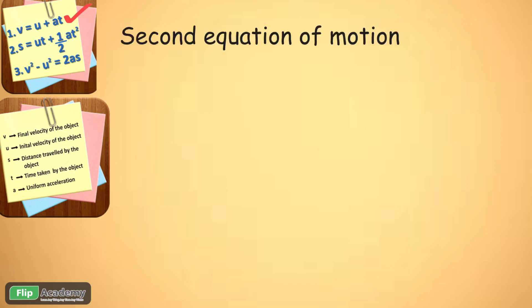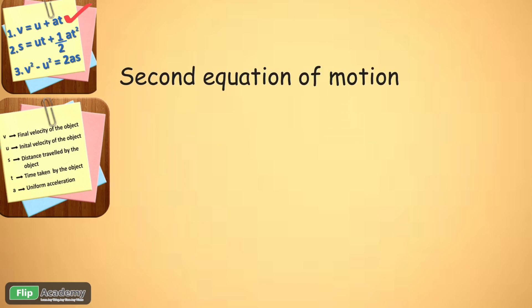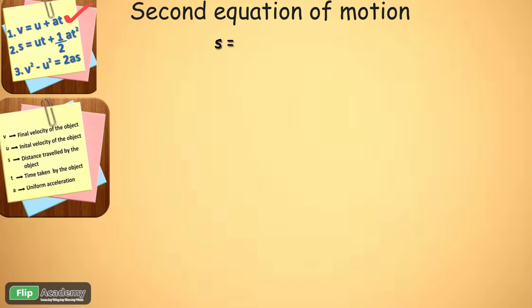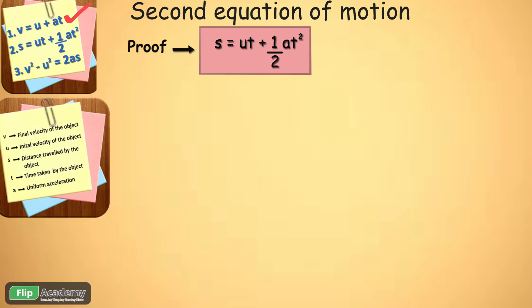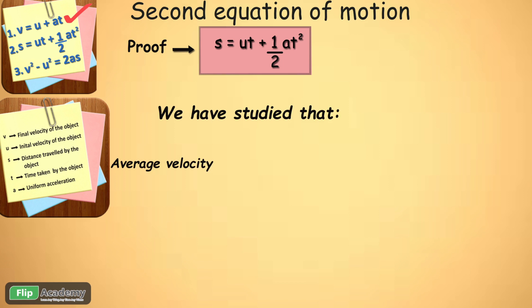Now let us start with the second equation of motion: S equals UT plus half AT squared. To prove this equation, we recall that the average velocity is given by the initial velocity plus final velocity upon 2, where U represents initial velocity and V represents final velocity.